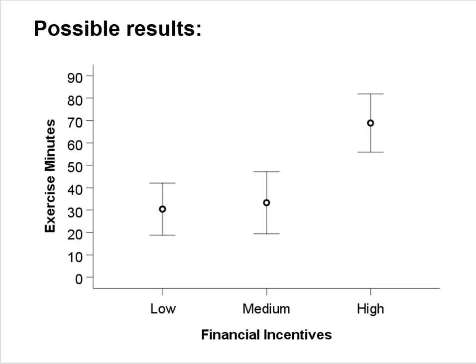Here's a figure that illustrates possible results. You haven't conducted the study yet, but you'd be pleased to get results something like this. The independent variable is represented on the x-axis — financial incentives. You'll randomly assign seven students to the low incentive condition, seven to the medium incentive condition, and seven to the high incentive condition.